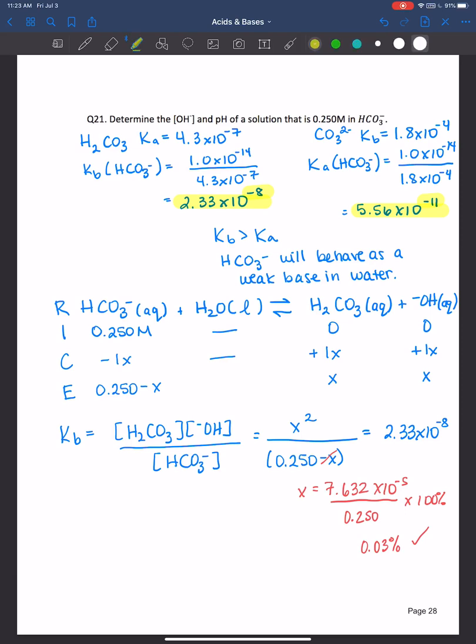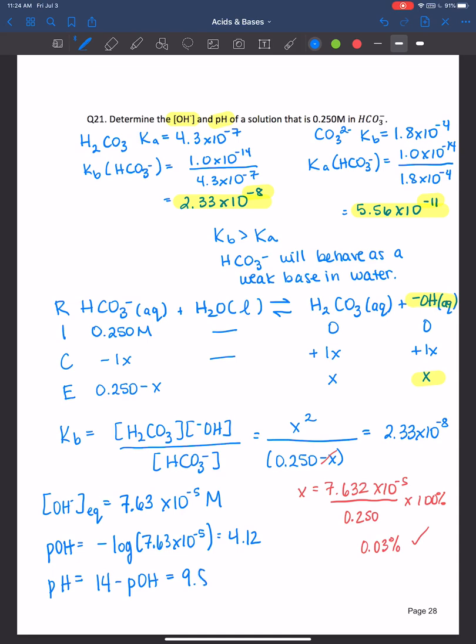And it looks like we're asked to calculate the hydroxide ion concentration and the pH. So therefore, we need to figure out the hydroxide ion concentration at equilibrium, which is just x. So therefore, hydroxide is equal to 7.63 times 10 to the negative 5th molar. The pH is equal to negative log of 7.63 times 10 to the negative 5th, which is 4.12. And the pH of the solution is 14 minus the pOH, which is equal to 9.88.